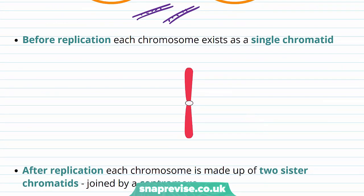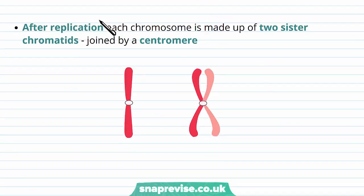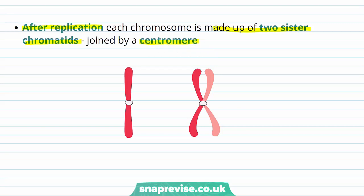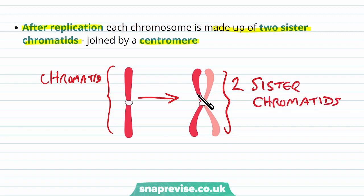Before replication, each chromosome exists as a single chromatid. This will double as it replicates, and this will happen for every single chromosome. Once the DNA has been replicated, each chromosome will be replicated as a set as well. Each chromosome is then made up of two sister chromatids, joined in a central structure known as the centromere. These are two genetically identical chromatids, and here in the middle we have the centromere.